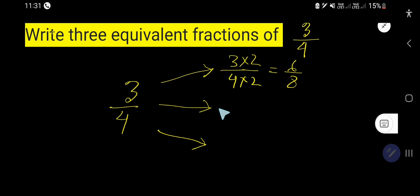Now we are going to find out the second equivalent fraction. 3 over 4, and after 2, we have 3. So, 9 over 12.